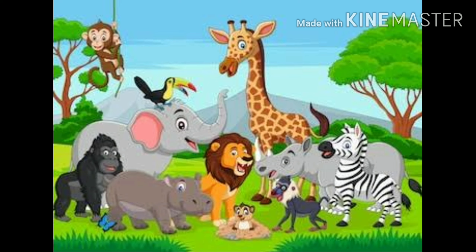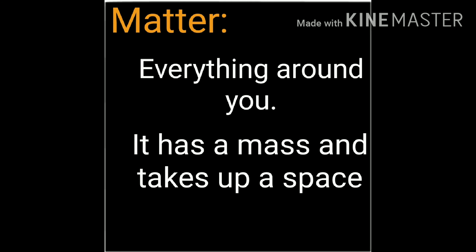So whatever is around you — anything you can see around you — and whatever occupies a space, that is matter. Everything around you that you can see is matter. It has a mass and it takes up space. Each and everything is made up of matter.